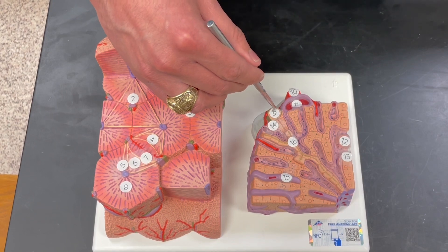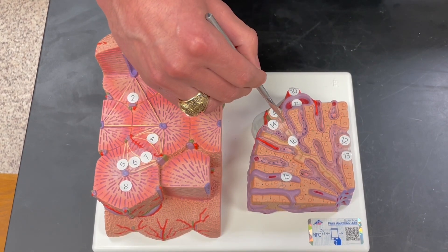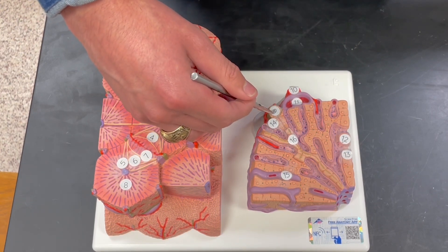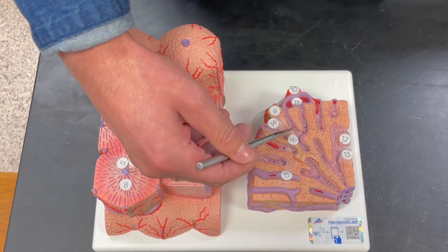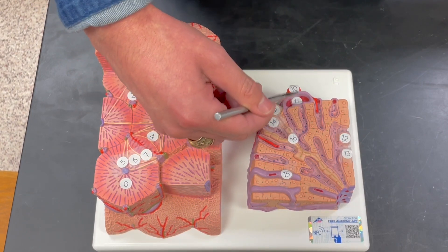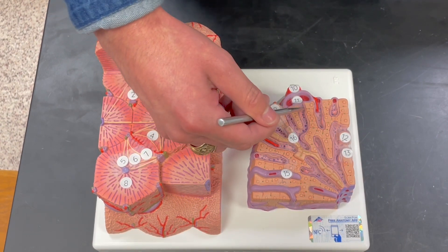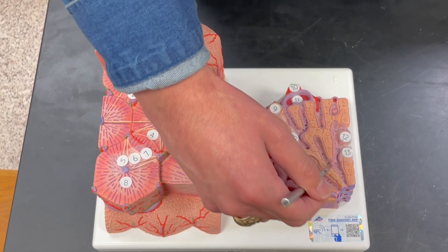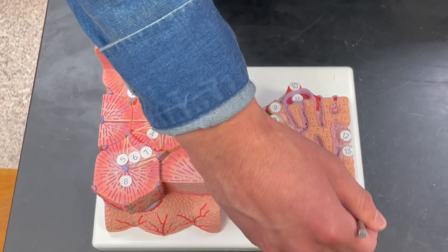Bile is produced by the liver and then stored within the gallbladder. This will eventually lead to the gallbladder. The blood is mixing here from both of these to get within the different sinusoids, leading into this part which is the central vein.